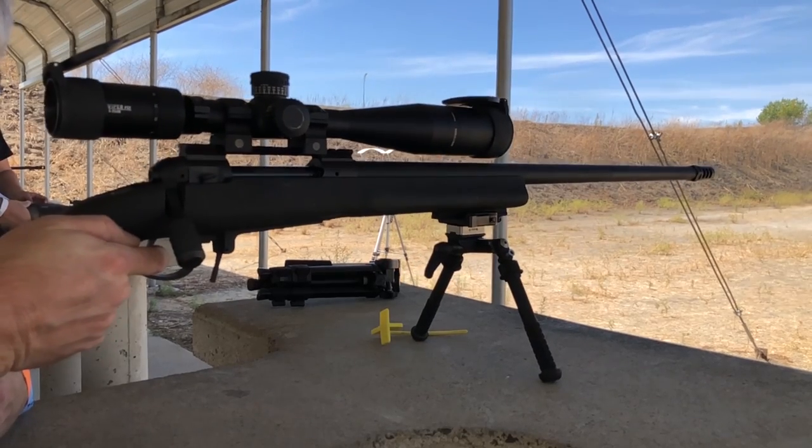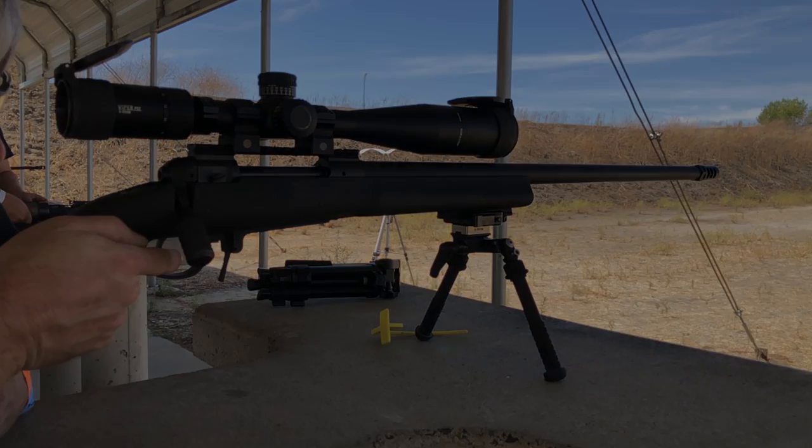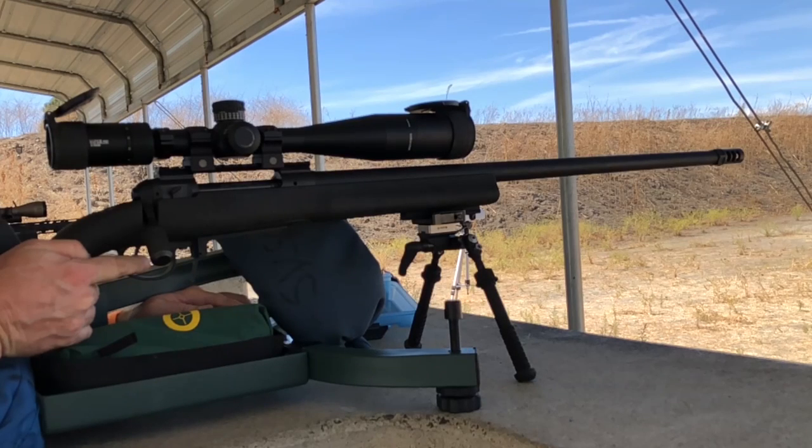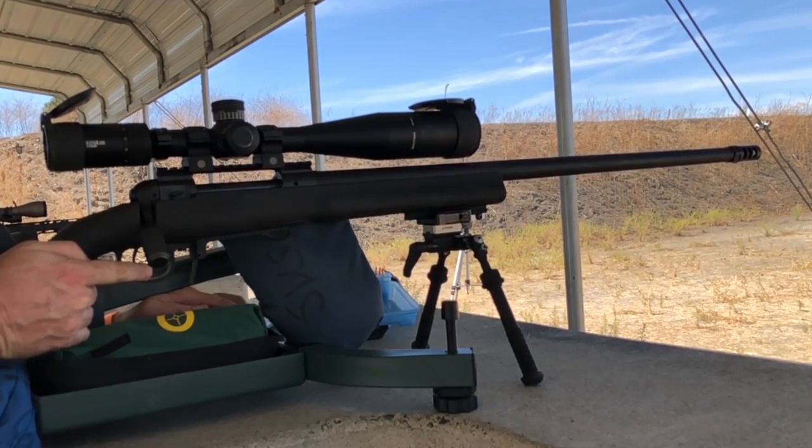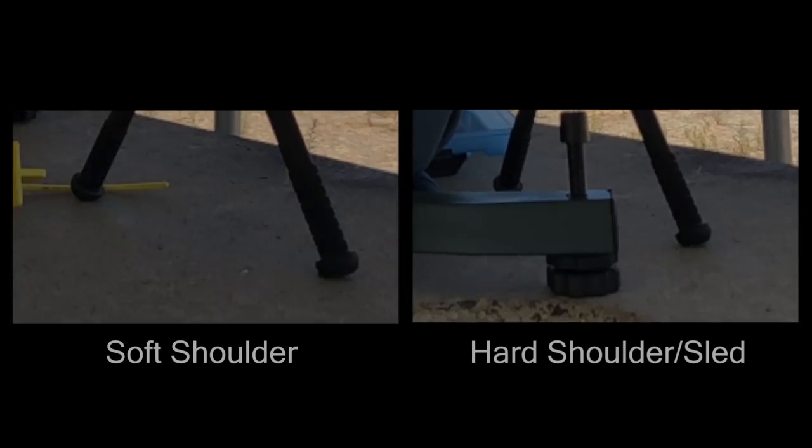And then we went out to the range and we compared shooting with a soft shoulder to shooting with a hard shoulder. And you can see when you do that, that the hard shoulder puts a lot more recoil force back into the rifle, causing it to jump around a little.